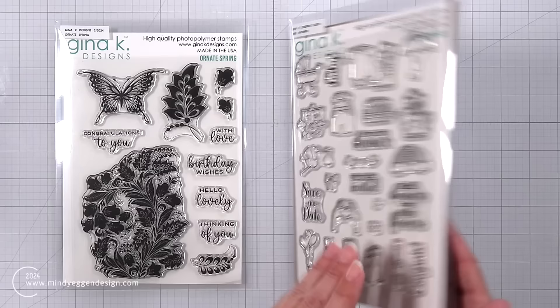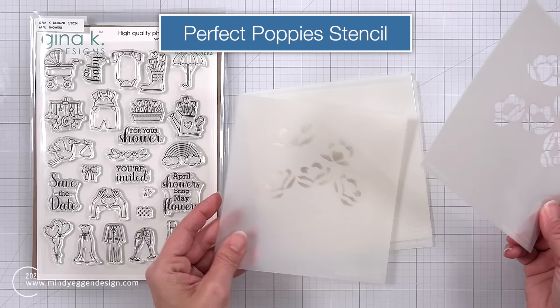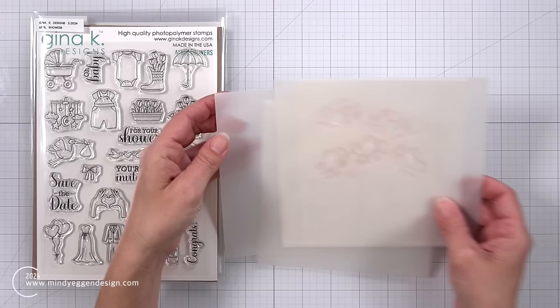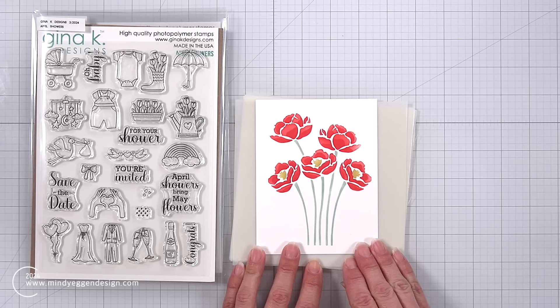This is the Perfect Poppies stencil. It is a four-piece layering stencil set. I will be using this on my card project today. It is a beautiful stencil and here is a look at that. I just kind of quickly did up some colors here to see what it looked like.